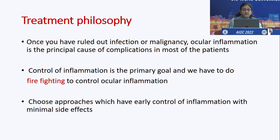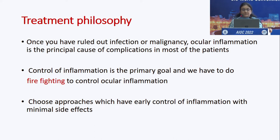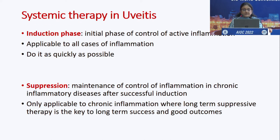My talk covers the rationale for selecting systemic therapy, the use of systemic steroids as first-line therapy, immunosuppressive therapy, and newer systemic drugs. Once you have ruled out infection or malignancy, ocular inflammation is the principal cause of complication. The control of inflammation is the primary goal — we have to do it like firefighting. We must choose approaches with early control and minimal side effects.